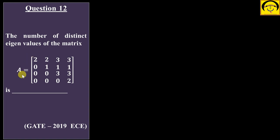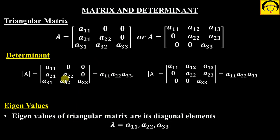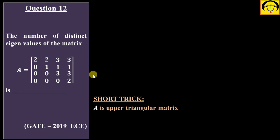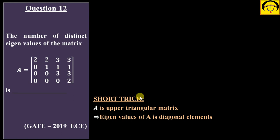Just as introduced, this is an upper triangular matrix, so its eigenvalues are its diagonal elements. Using the short trick: A is upper triangular, so eigenvalues equal the diagonal elements, which are 2, 1, 3, 2. The question asks for the number of distinct eigenvalues — since 2 appears twice, we count it once. The distinct eigenvalues are {1, 2, 3}, so the answer is 3.